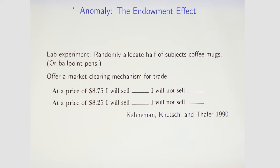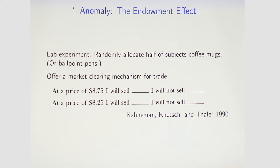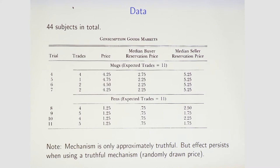Let me give you a pair of anomalies that might chip away at the belief that this is a good way to model human behavior. The first is the endowment effect — a classic lab experiment run at Cornell. You take a classroom full of students and randomly allocate half of them coffee mugs or ballpoint pens. You offer a market clearing mechanism for trade: each participant states for each price whether or not they're willing to sell (if allocated a mug) or willing to buy (if not). With 44 students, you approximately can't affect the market clearing price, so it's approximately truthful to state your true values.